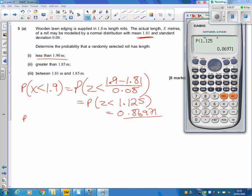Part B, same sort of thing, but this time it's a greater than, and the only difference being here, you're doing a 1 minus. 1 minus the probability that z is less than 1.85, take away 1.81, divided by 0.08. Again, just tapping that into the calculator. This time it gives you 0.30854.